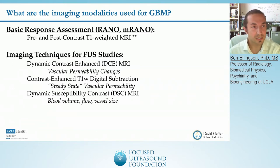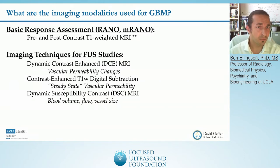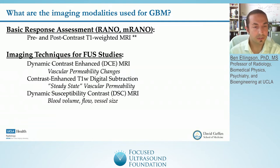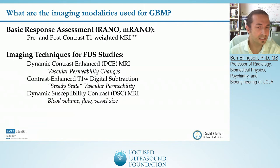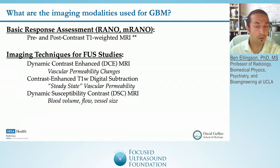First, I'm going to go into a little detail about the basic response assessment, the RANO criteria or the modified RANO criteria, the basis of which is really just pre- and post-contrast T1-weighted images. And then I hope to get into some specific techniques that might be useful for focused ultrasound studies, including dynamic contrast enhanced MRI for vascular permeability changes, contrast enhanced T1-weighted digital subtraction maps for steady state vascular permeability, and dynamic susceptibility contrast MRI that can give us an estimate of blood volume, blood flow, and even vessel size.